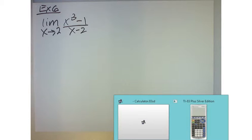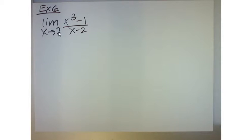If you look at example number 6, clearly, algebraically, I cannot plug in 2. Because I'll get 0 in the denominator, right?